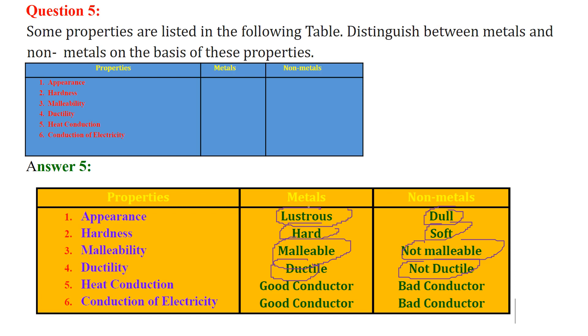Heat conduction, metals are good conductor, non-metals are bad conductor. Conduction of electricity, good conductor metal, non-metal bad conductor. So malleability, ductility, metals are malleable, ductile, they have good heat and good conduction of electricity. While non-metals, they are neither malleable nor ductile and they are bad conductor of heat and electricity.